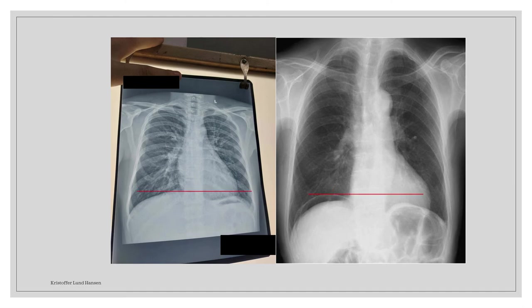Another thing: in a case of real pneumoperitoneum, the air will always be on the right side of the abdominal cavity. This is because the abdominal cavity goes a bit higher up on the right side as a result of the location of the liver. You can, of course, have air inside the abdominal cavity on the left side as well, but it will always be present on the right side at the same time.